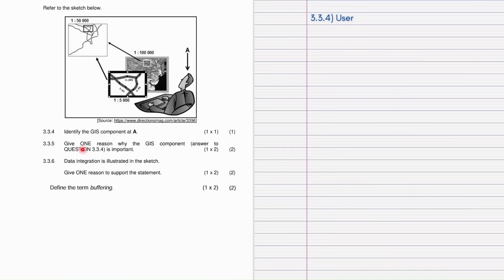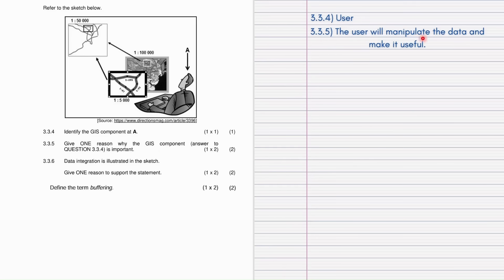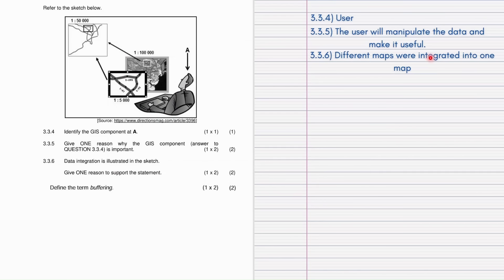Question 3.3.5 asks for one reason why the user component is important. The answer is that the user will manipulate the data and make it useful — this gives you two marks. Question 3.3.6 states that data integration is illustrated in the sketch, and asks for one reason to support that. The answer is that different maps were integrated into one map, which also gives you two marks.